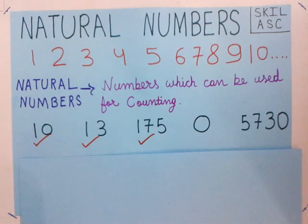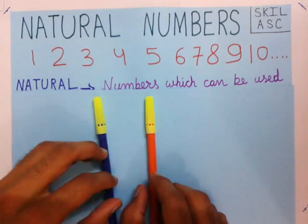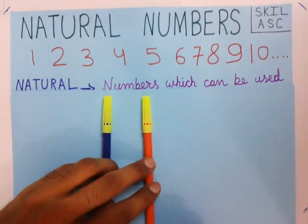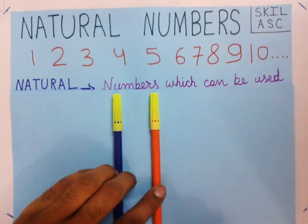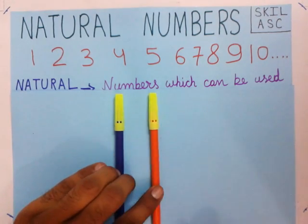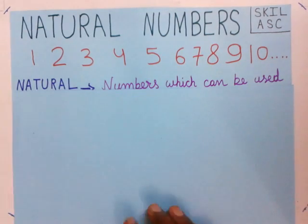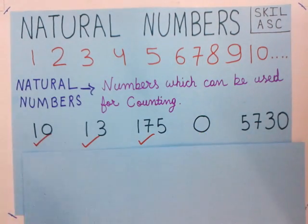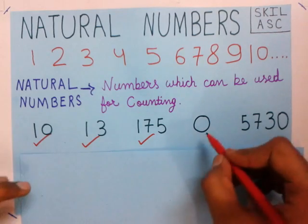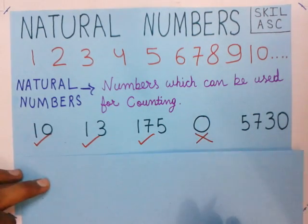Now consider zero. I have two colors here and we count one, two — we don't say zero, one. We are not using zero while counting. So zero is not a natural number. We cross it out — this is not a natural number.